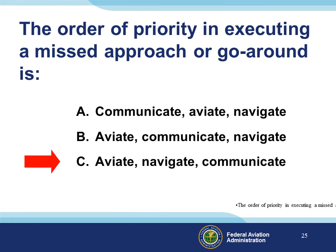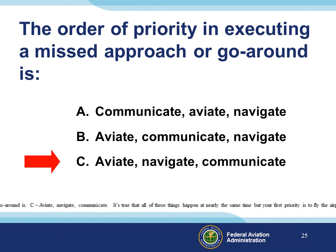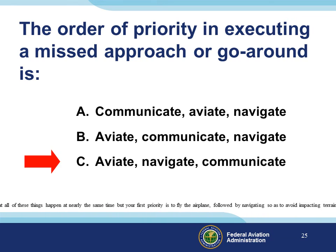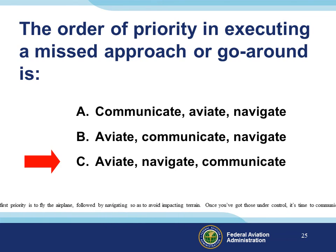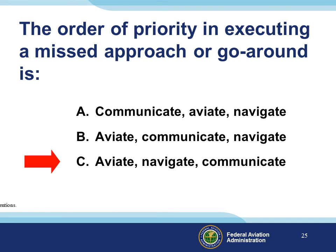The order of priority in executing a missed approach or go-around is: Aviate, Navigate, Communicate. It's true that all of these things happen at nearly the same time, but your first priority is to fly the airplane, followed by navigating to avoid impacting terrain. Once you've got those under control, it's time to communicate your intentions.